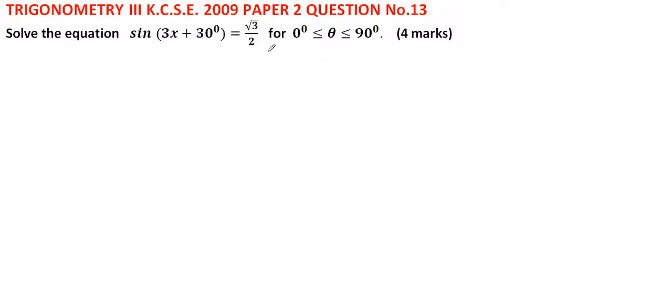We start by dividing √3 by 2. So sin(3x + 30°) equals, when you divide √3 by 2, you get 0.866.